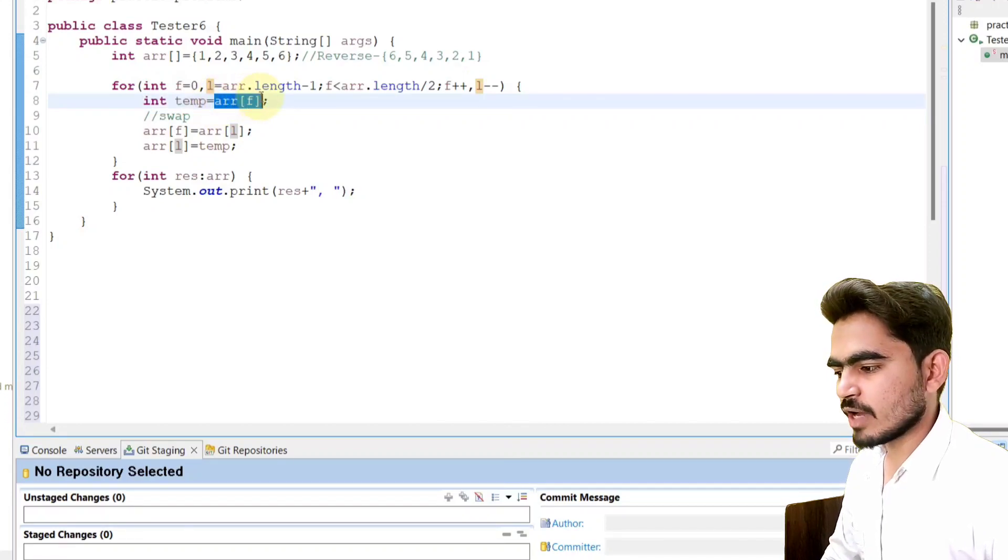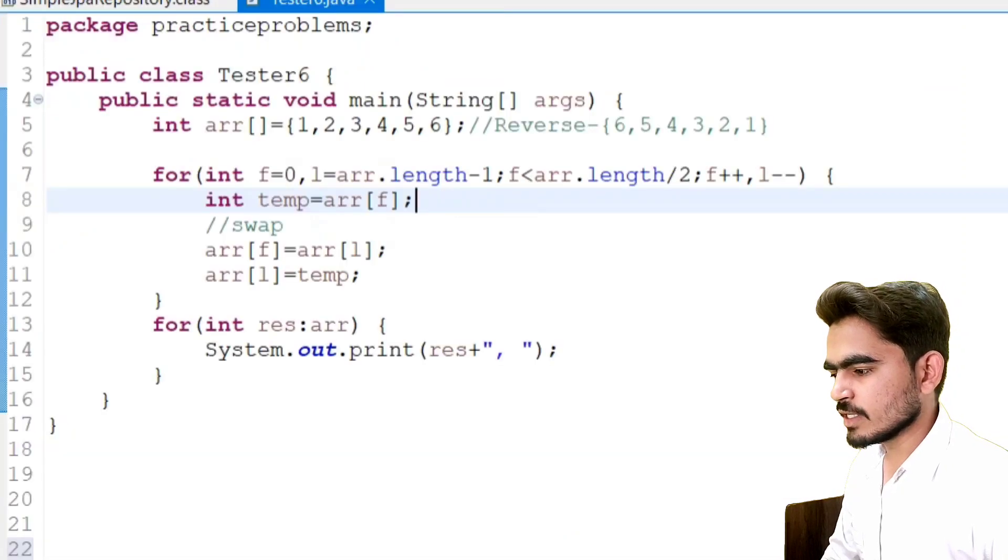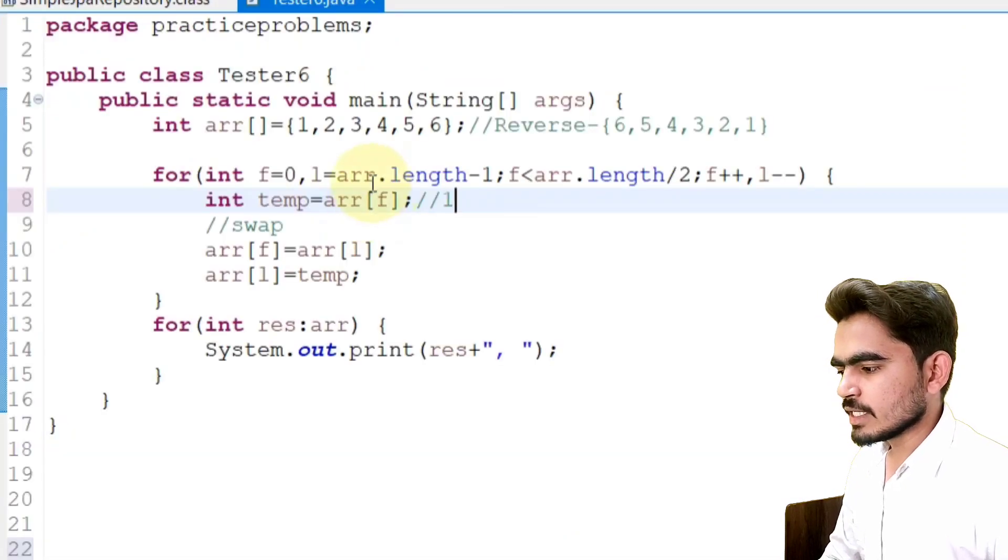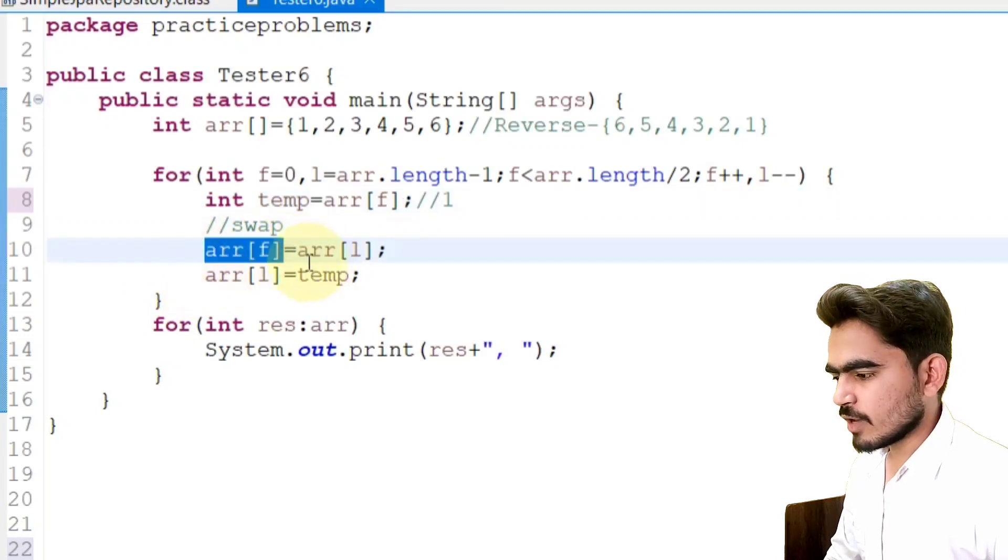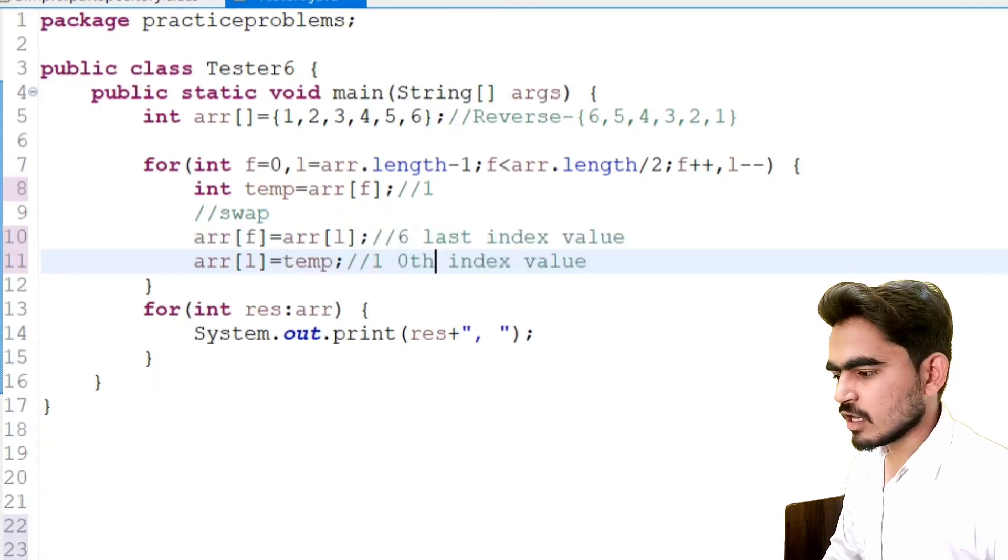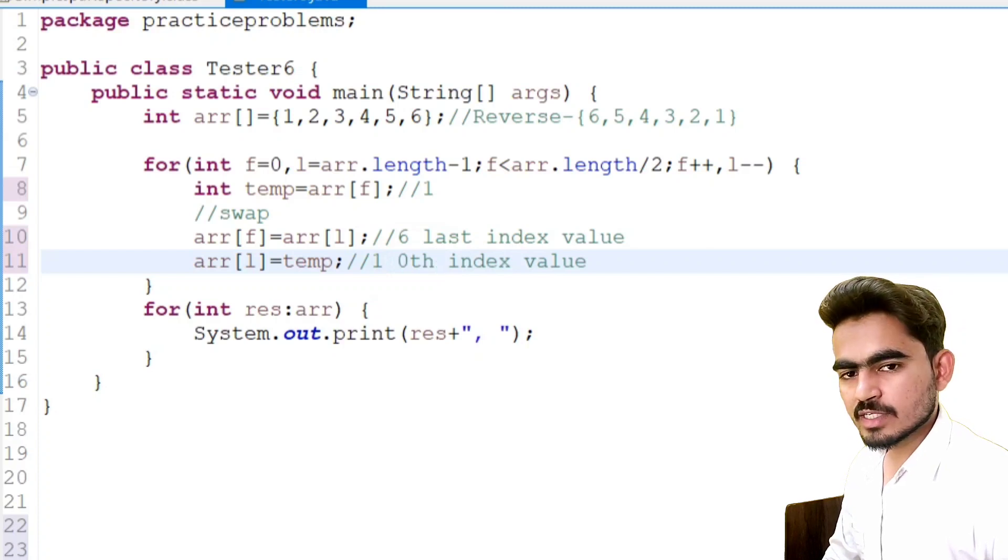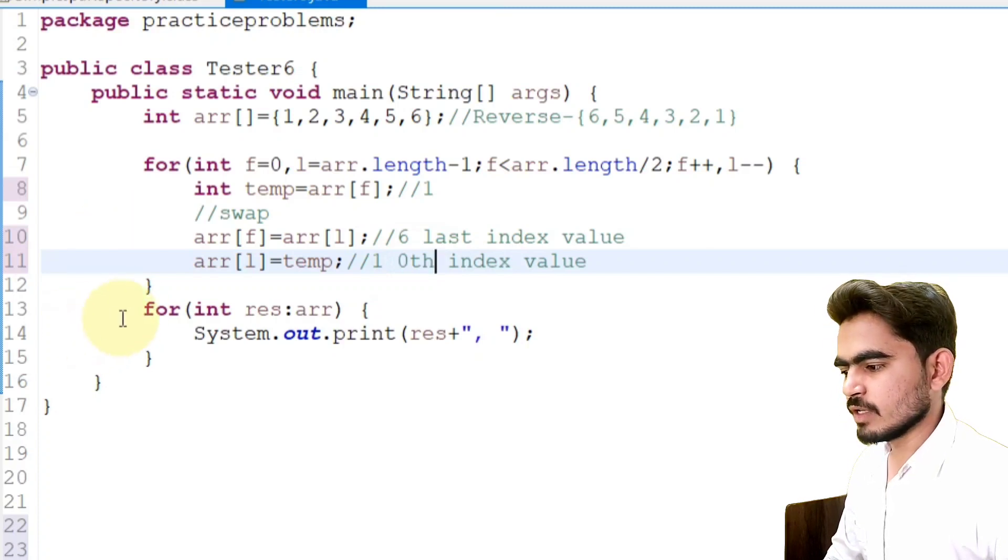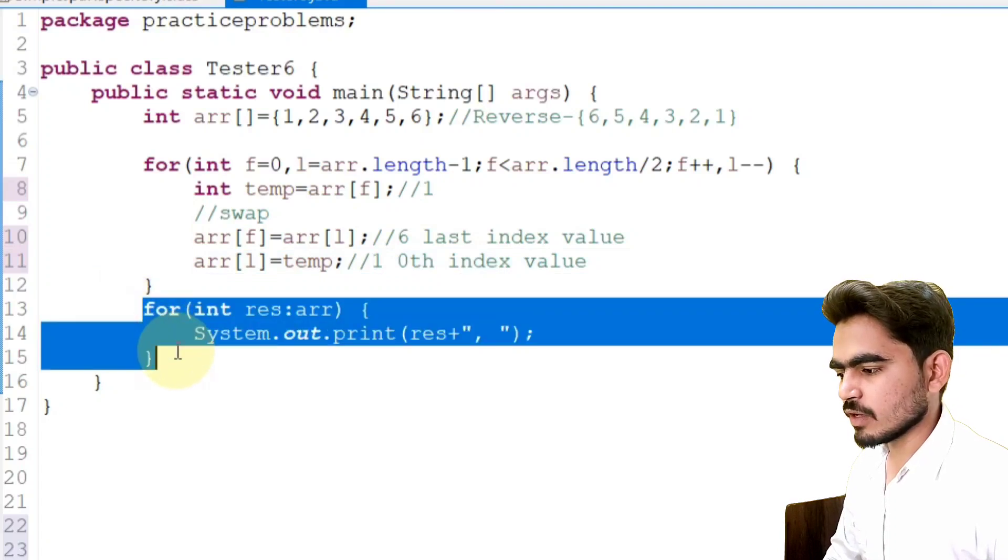Here in first iteration, what is the value of f? 0. At the 0th index, I will store the value present at last index. At the last index, I will store the value present at 0th index. Like this, we will perform swap operation for remaining numbers as well.